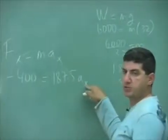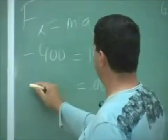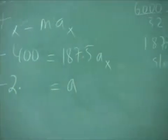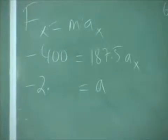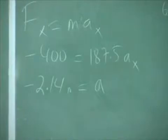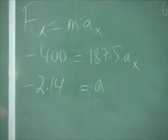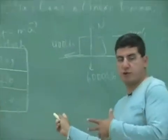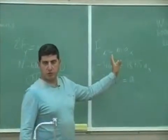Now I can drop the subscript X — we know the acceleration is in the X direction. So the acceleration equals negative 400 divided by 187, which gives negative 2 point something. The units: we're in the British system, using pounds and slugs, so when you divide the two, you get feet per second squared.